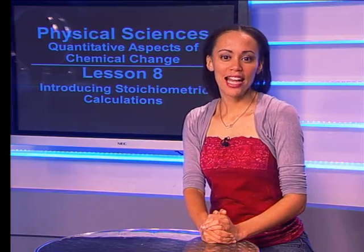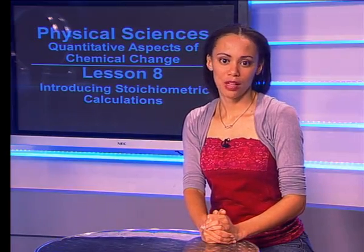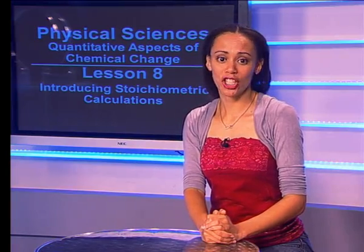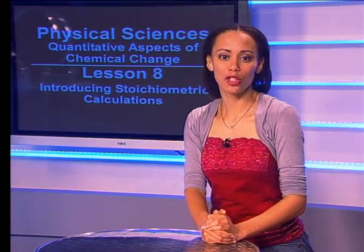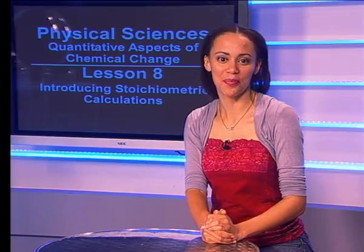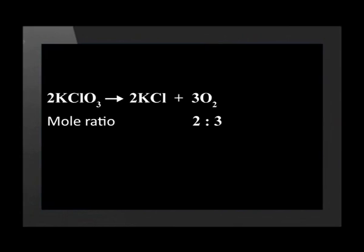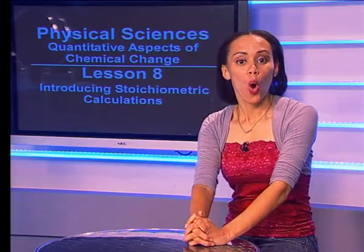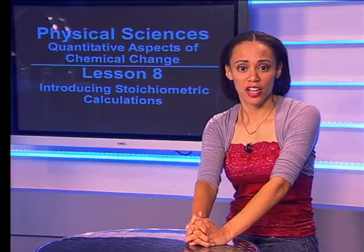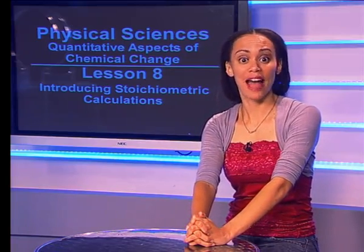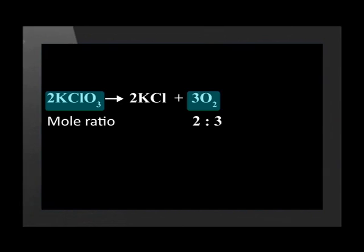Now that that's done, let's move on to step 3. We need to use the mole ratio to determine how many moles of potassium chlorate are required to form 0.5 moles of oxygen. The mole ratio in the balanced equation is 2 moles of potassium chlorate forms 3 moles of oxygen. We only need 0.5 moles of oxygen. This means we must divide the ratio by 2. This gives us the required ratio of 1 mole is to 1.5 moles.